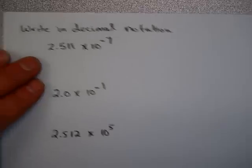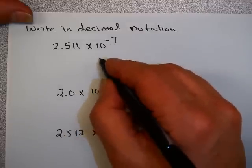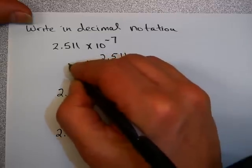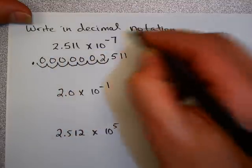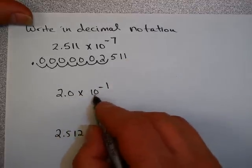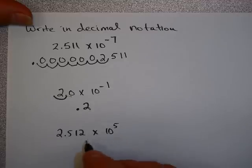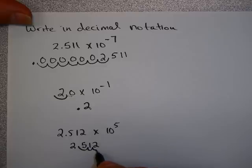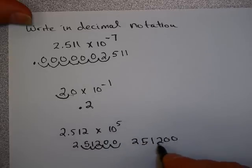Sometimes we have to convert from scientific notation back to decimal notation. Starting with a number times 10 to the minus 7, I divide by 10 seven times — moving the decimal 1, 2, 3, 4, 5, 6, 7 places to get the result. For 2.0 times 10 to the minus 1, I just divide by 10 once — that's just 0.2. And for 2.512 times 10 to the 5th, I start with 2.512 and multiply by 10 five times, moving the decimal right 5 places to get 251,200.